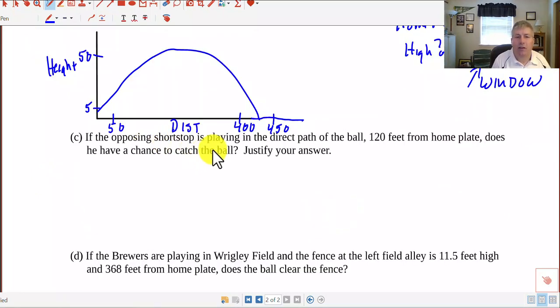The opposing shortstop is playing in the direct path of the ball, 120 feet from home plate. Does he have a chance to catch the ball? Let's take a look here. 50, 100, 150, 120 feet. That looks like that ball is going to be pretty high based on our graph, but let's, algebraically, let's figure that out. Well, the 120 feet from home plate, that is an X value, and what we want to find is the Y.